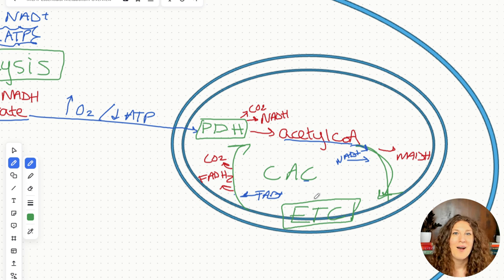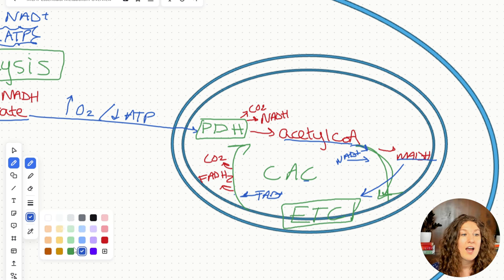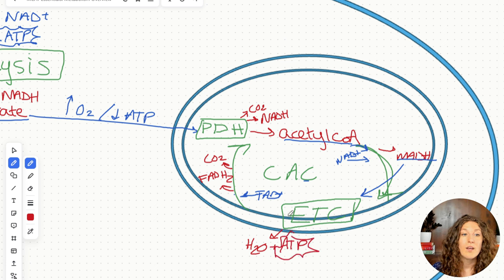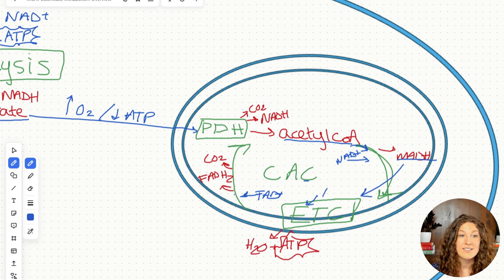That enzyme takes FAD and turns it into FADH2 and then back to FAD and back to FADH2. So FADH2 doesn't have to travel far to drop off its electrons — it stays in the same enzyme complex. Coming into the electron transport chain is NADH, and also oxygen. This is why we needed oxygen — in order for the mitochondria to produce ATP via the electron transport chain, we have to have oxygen.